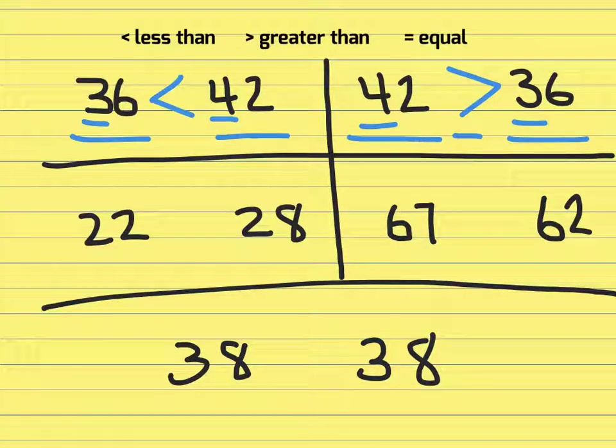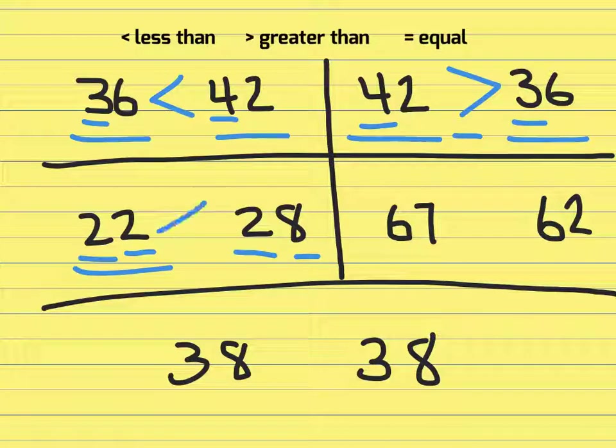Now we have the number 22 compared to the number 28. Two tens, two tens. Okay those are the same. Now we need to go to the ones place. Two ones, eight ones. Two ones is less than eight ones. So they will say 22 is less than 28.